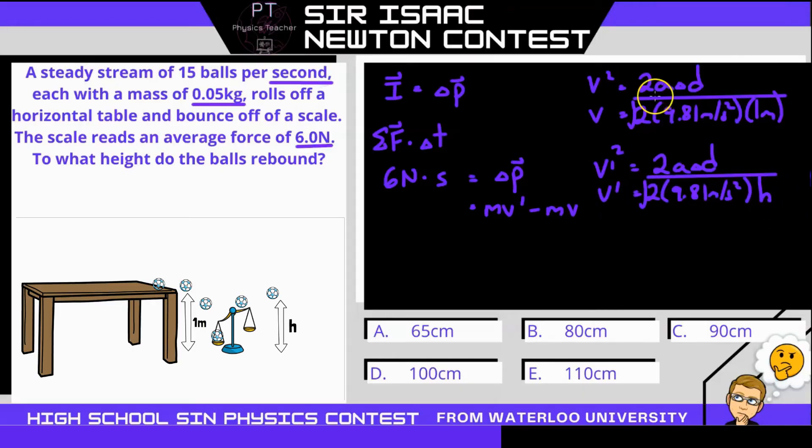We also have to recognize that these are vectors. So this direction is going to be down, and this direction is going to be up. So when we find our change in momentum, the mass is going to be the same, because it's the same ball.